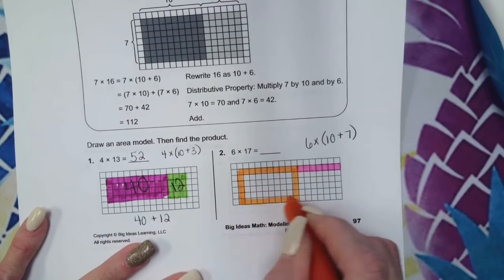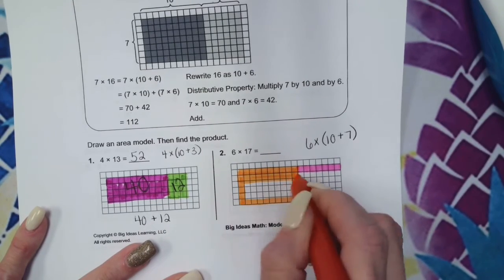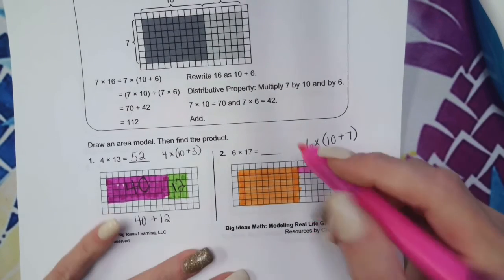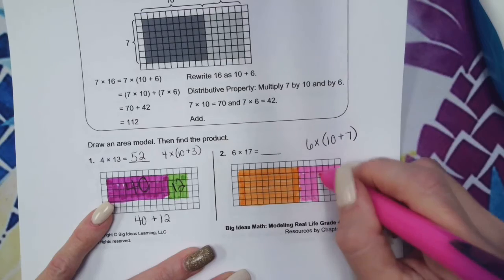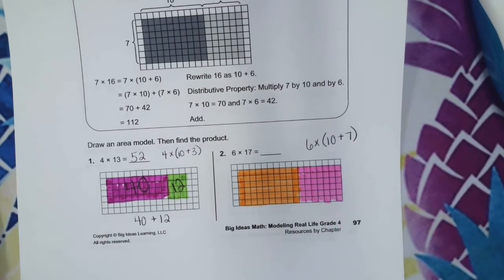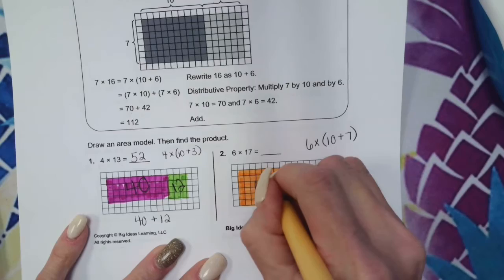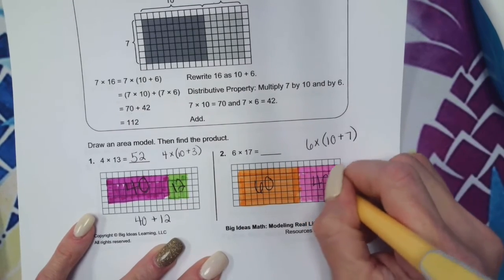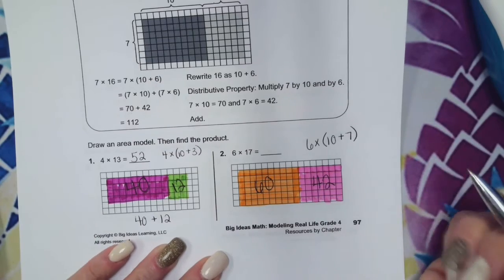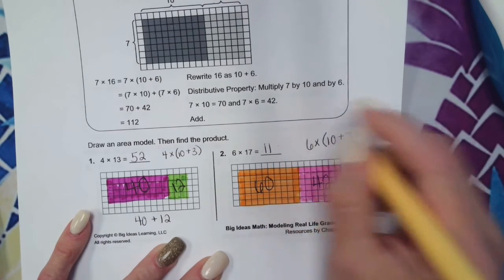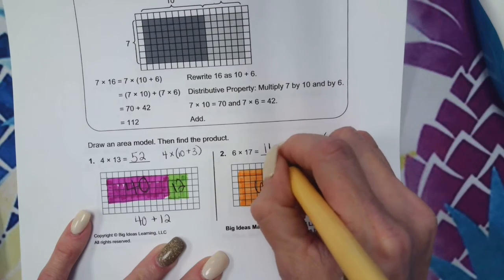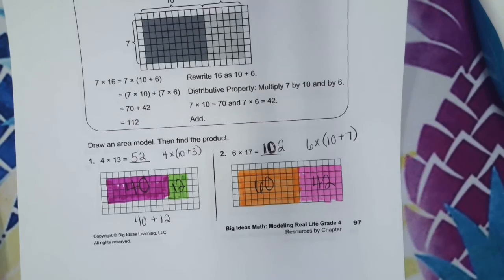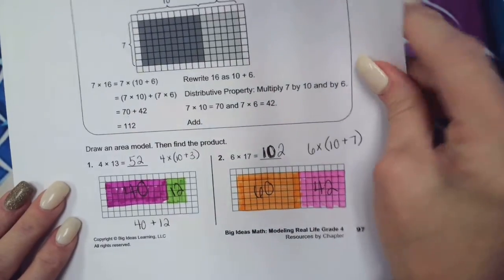We're going to shade all this one here. What is 6 times 10? 60. What is 6 times 7? 42. What is 60 plus 42? 102. I thought it was 101, but it's 102.